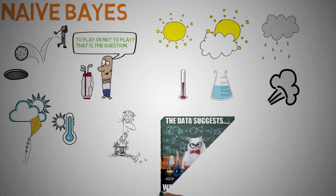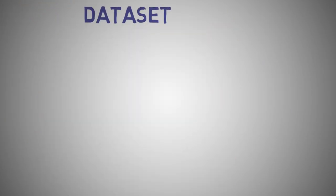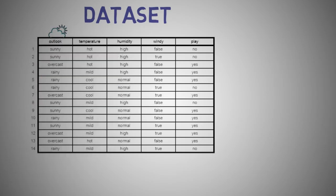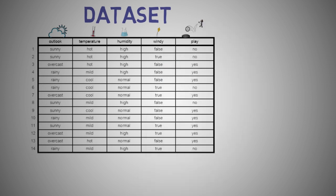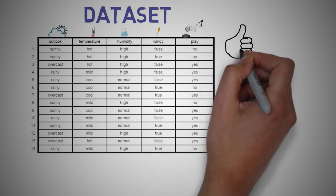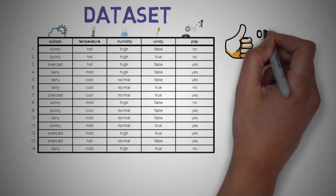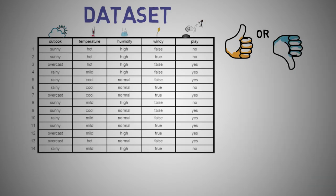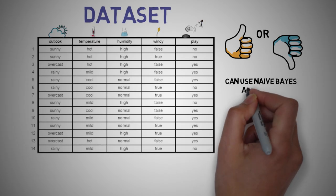Let's take a look at our dataset. So if we recorded our circumstances over 14 days, we have our outlook, temperature, humidity, wind speed, and our dependent variable, which is whether or not we play golf. The objective here is to estimate the likelihood of playing golf — yes or no — given weather condition information. So based on this data, let's see how we can approach this problem using the Naive Bayes algorithm.